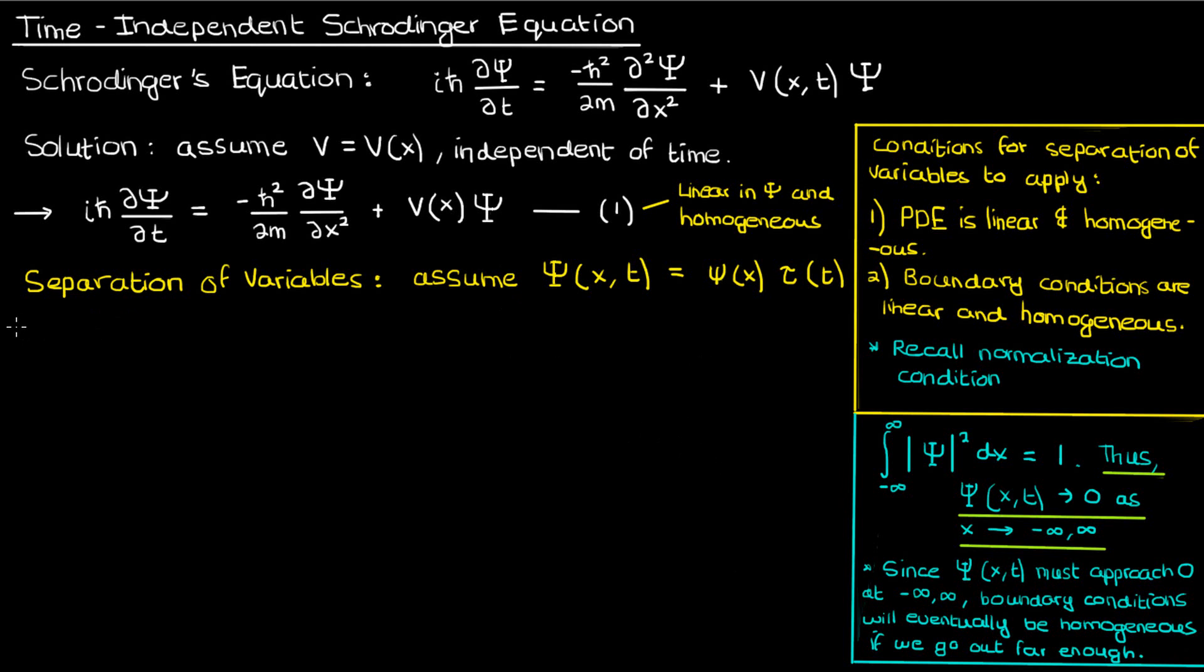This may not be the most rigorous justification for why the boundary conditions for Schrödinger are homogeneous but it's the best I could come up with and I think it's a better alternative than just hand waving or ignoring the reasons we can use separation of variables, which a lot of books do ignore. If you have a better justification do let me know in the comments.